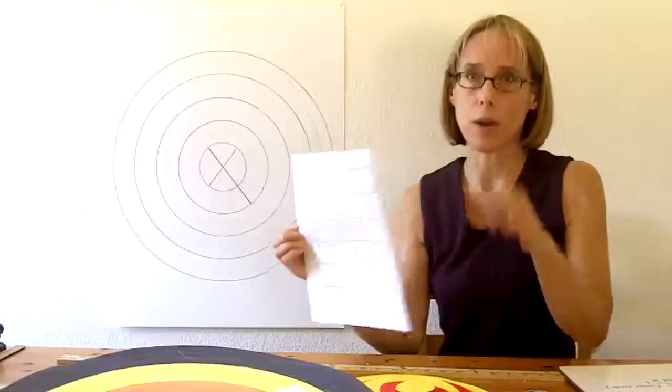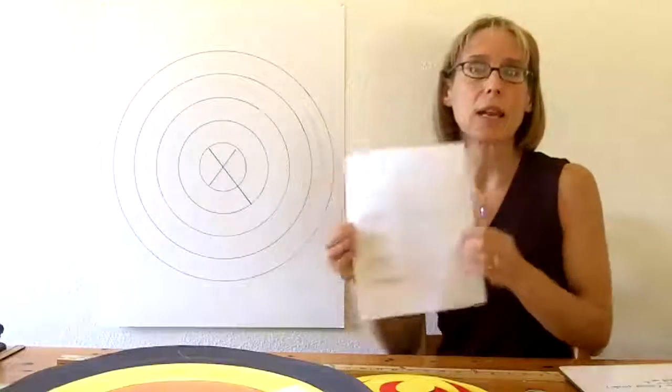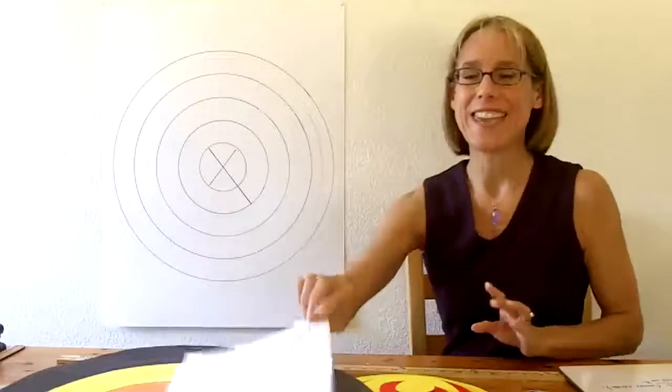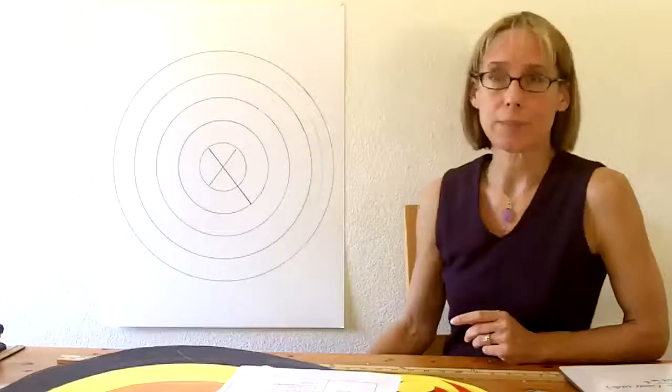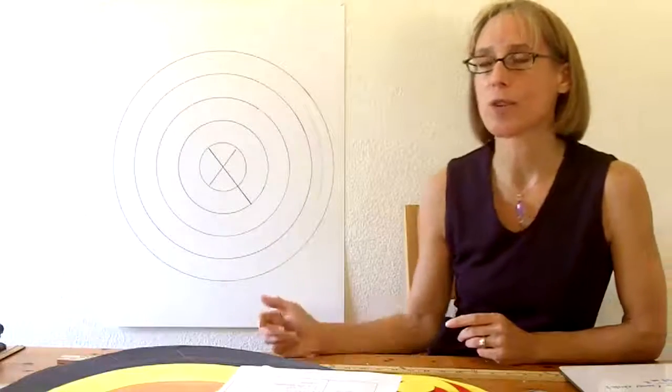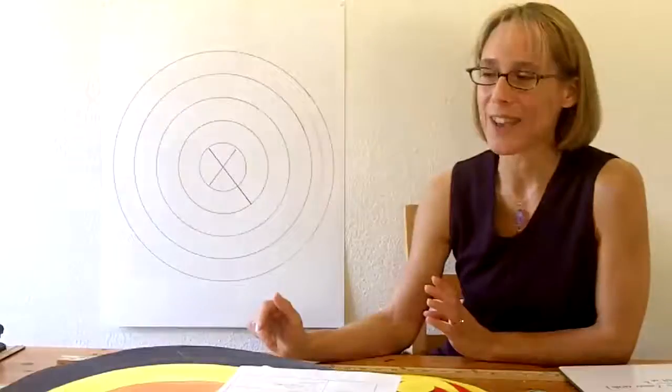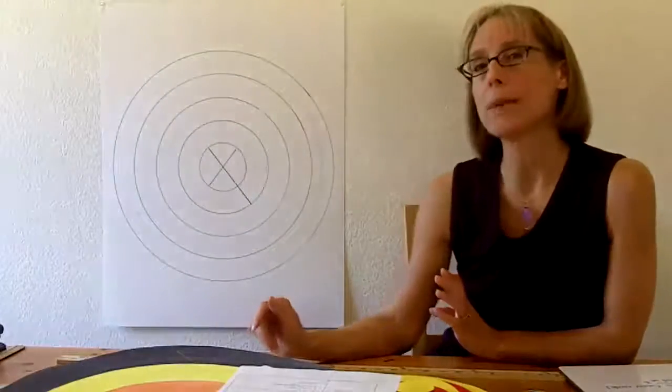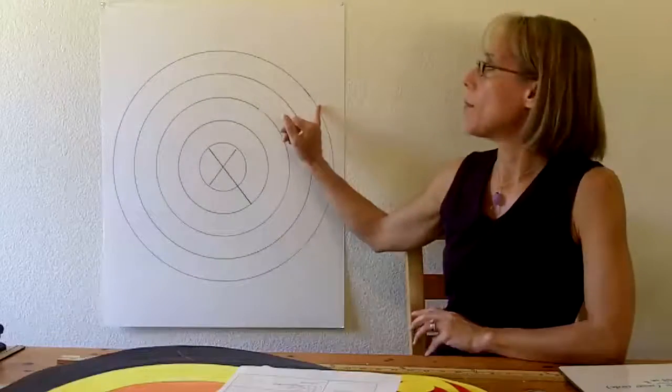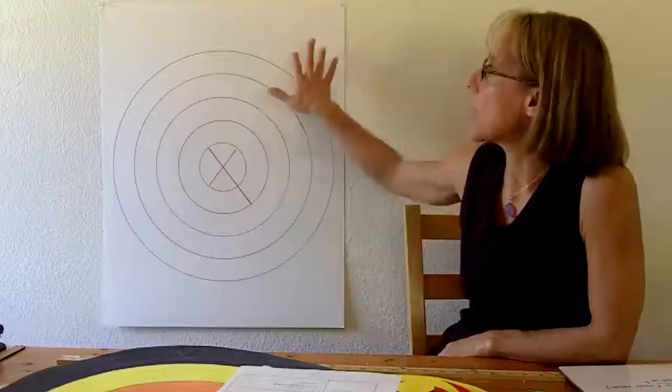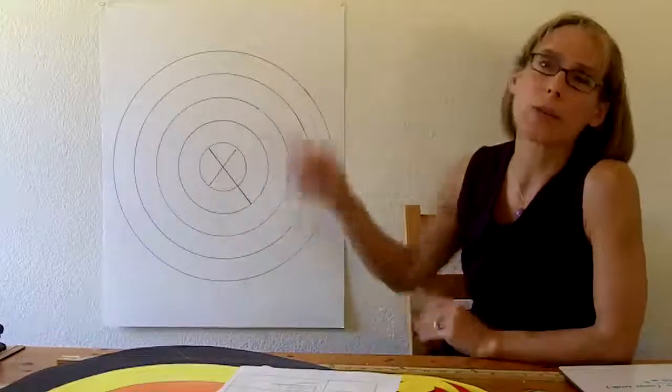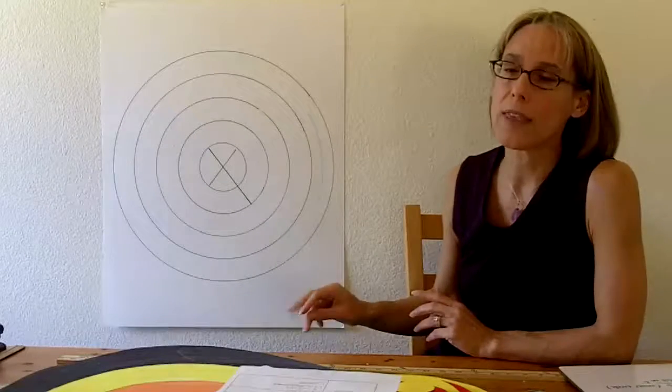When they have this done and I've cleared them, they get to decorate their targets. Since we did this for a fall carnival, they did lots of Halloween colors. It was really fun. Some students like to decorate it, then cut out their circles. And some students don't want to cut out their circles. They actually want to decorate the whole poster. It doesn't really matter to me what they do.